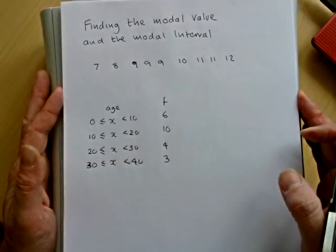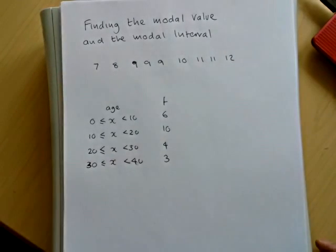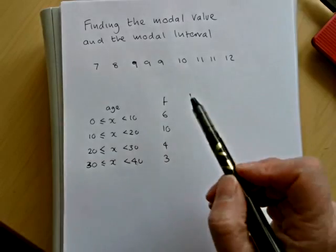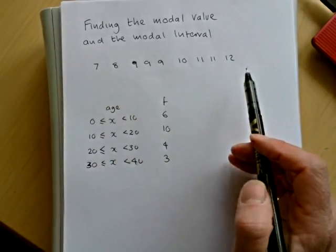I'll show you how to find the modal value and the modal interval when we're looking at data. So the first bit of data we're giving is a list of ages and they've been put in order for us.